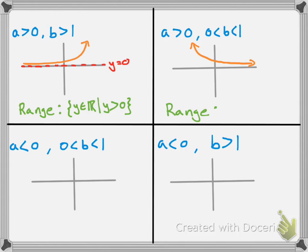In the second case — a greater than 0 and b between 0 and 1 — we get what we typically call exponential decay. Notice that we still have an asymptote at y equals 0, and the graph is still entirely above the x-axis. So just like before, the range is y as an element of the real numbers such that y is greater than 0.